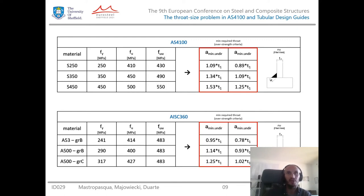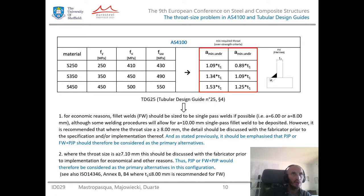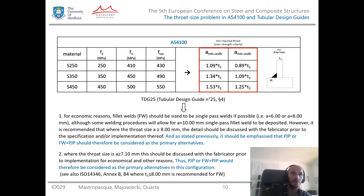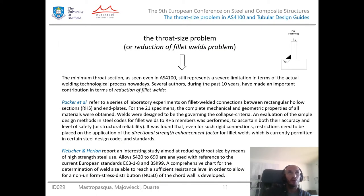In most cases the required throat is even greater than the wall thickness to be welded. The Australian standard however promotes at least two incentives to the designer and fabricator to move to a different kind of welding solution — in particular, partial joint penetration or compound joint penetration, which is a combination of fillet weld and partial joint penetration. The same recommendations are visible in recent international standard ISO 14346. This issue is known as the throat size problem, or sometimes referred to as a reduction of fillet weld problem.